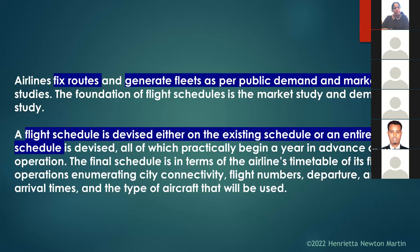Airline scheduling is timetabled as per operations and clearly lists city connectivity — for example, flying from Dubai to Johannesburg with a flight number such as EY123, a departure time of 2 PM, an arrival time, and the type of aircraft used. This is flight scheduling, strategically devised based on market study and public demand, devised one year in advance.